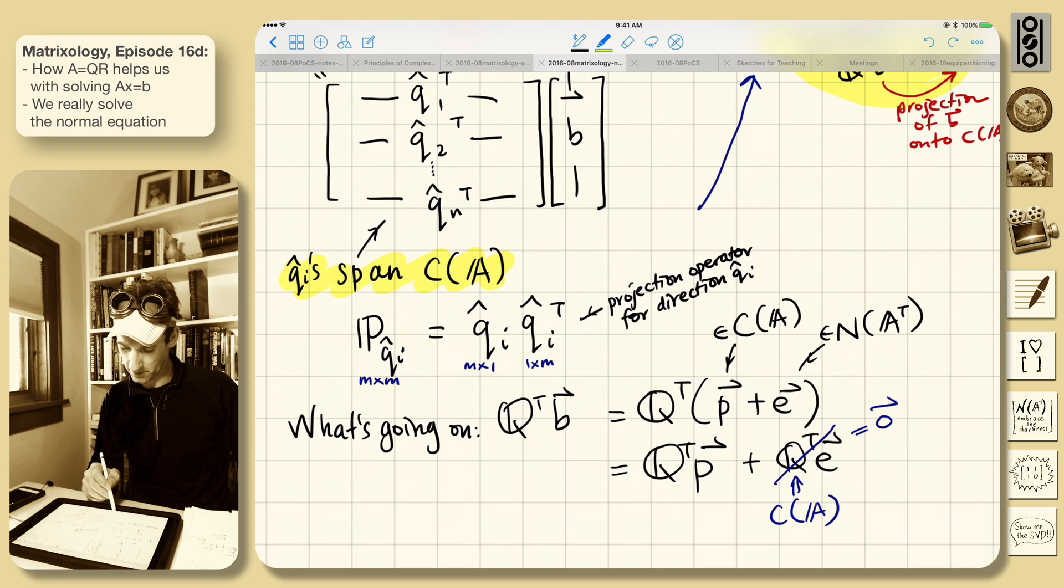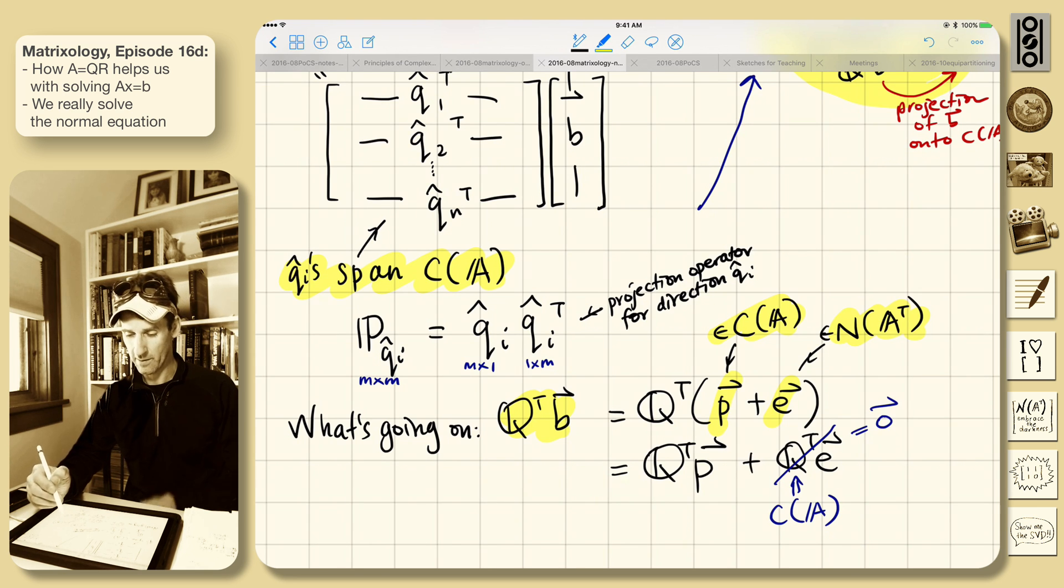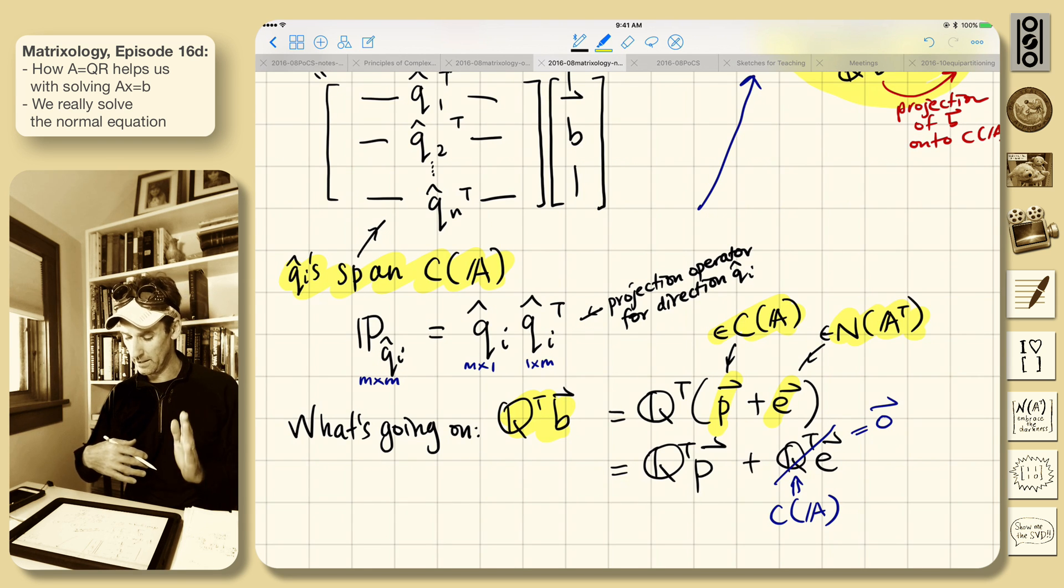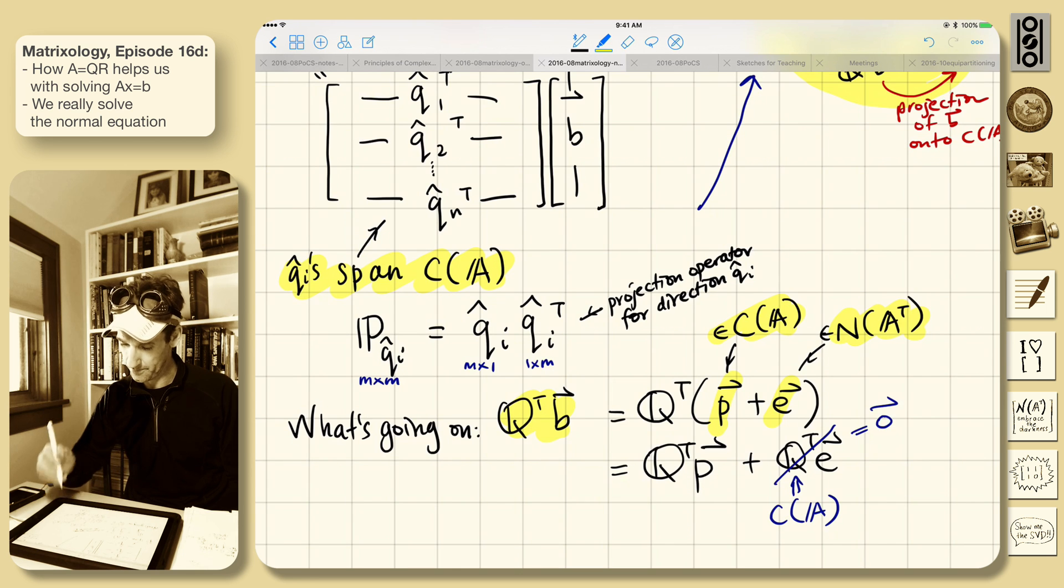That's just an extra piece here about the projection thing. Q transpose B. Well, B is P plus E. So there's a part that lives in column space and a part that lives in left null space. The big deal is that Q transpose E has to be zero. Because the Q vectors are in column space, E is in left null space. So that's what this is. So we're left with Q transpose B is equal to just Q transpose P.